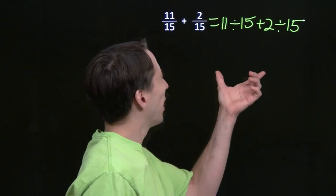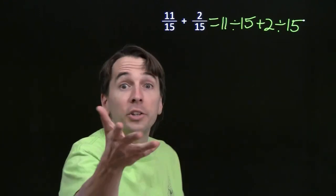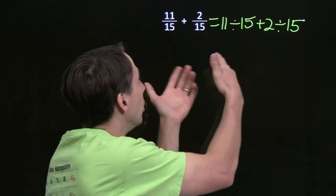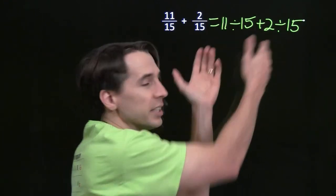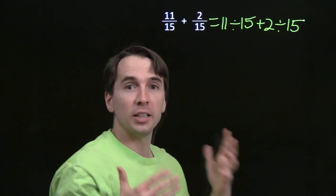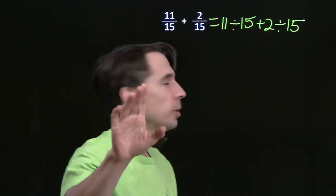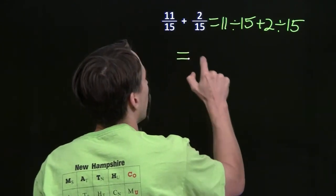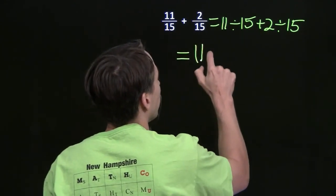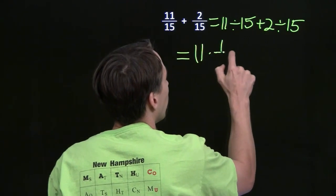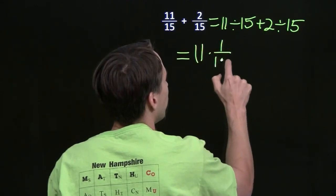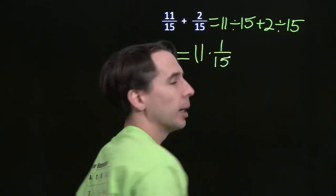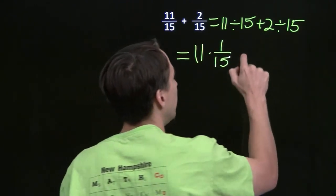What are we going to do with that? The distributive property — remember that? We're dividing by the same number in both cases, so we can use the distributive property. We can write this divided by 15 as multiplying by 1 over 15.